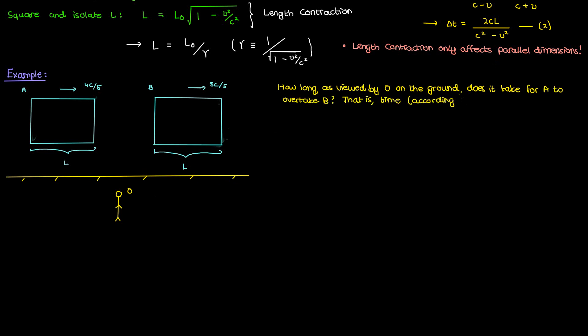In other words my question is how long is the time interval between when the front of A passes the back of B and then the back of A passes the front of B according to the observer O.